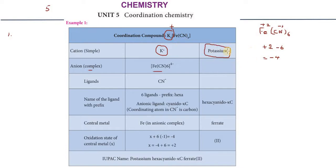Potassium is the cation. Now we have the anion complex. Name the ligand with the prefix. The number of ligands here is 6, so the prefix is hexa. This is the rule - we learn the prefix for 6 ligands.